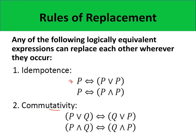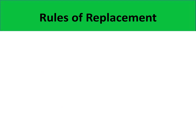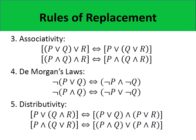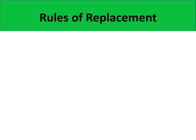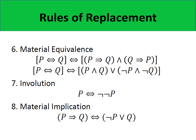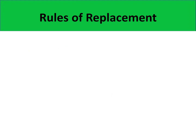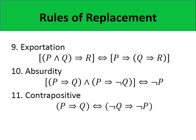The next slides contain other rules of replacement. The 3rd, 4th, and 5th rules are associativity, De Morgan's laws, and distributivity. We also have material equivalence, involution, and material implication. Additionally, we have exportation, absurdity, and contrapositive.